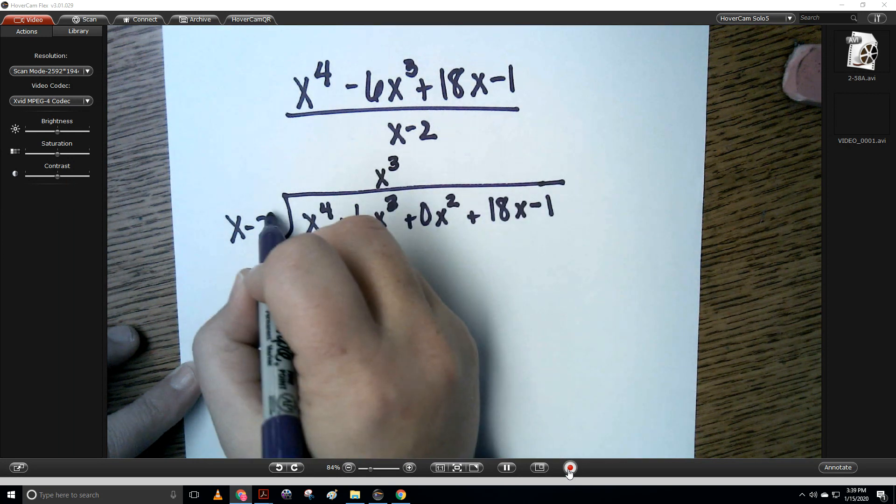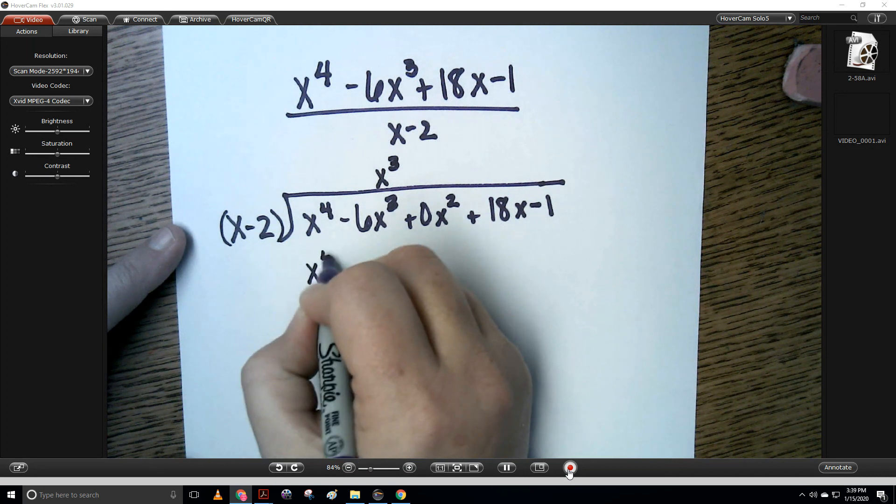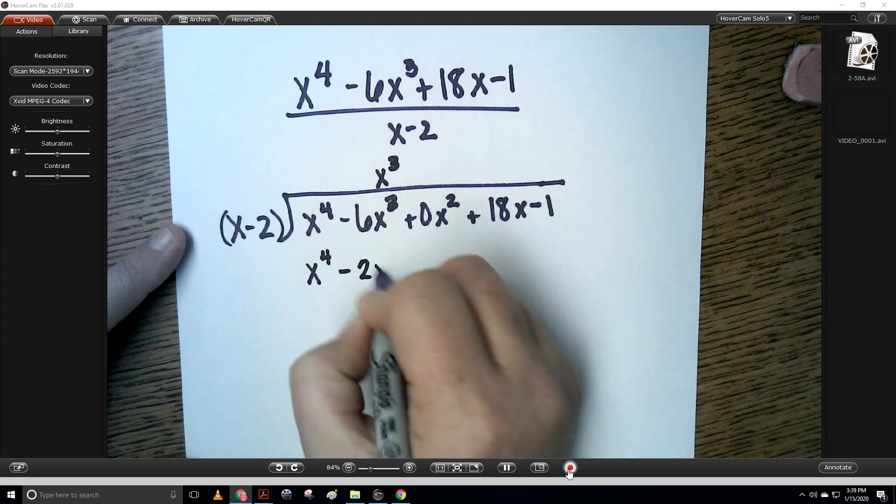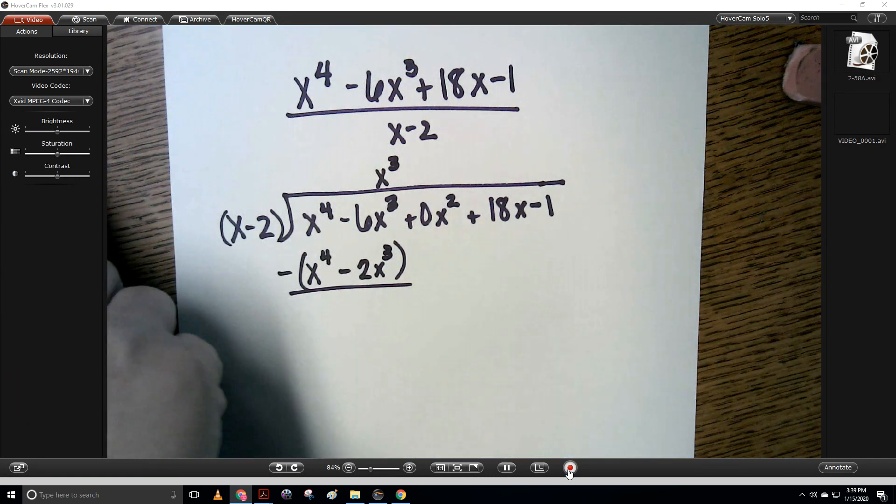Then we need to make sure that we multiply this quantity by x cubed. So that's going to give me x to the fourth and negative 2x cubed. And this is the part where people go wrong because they forget to distribute.